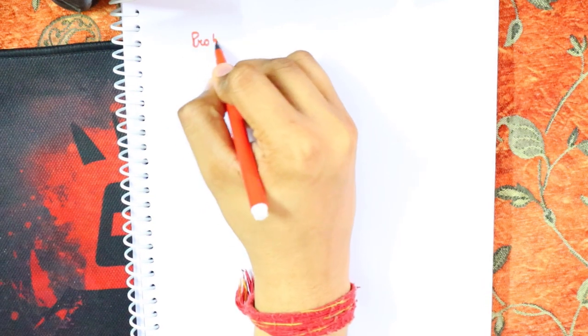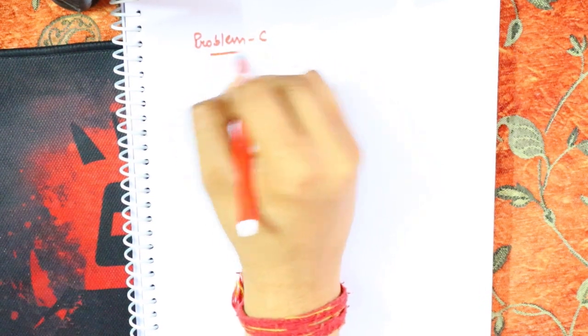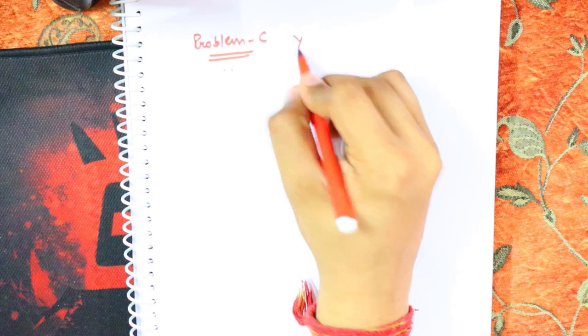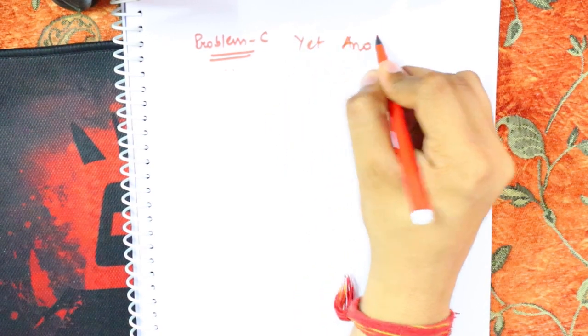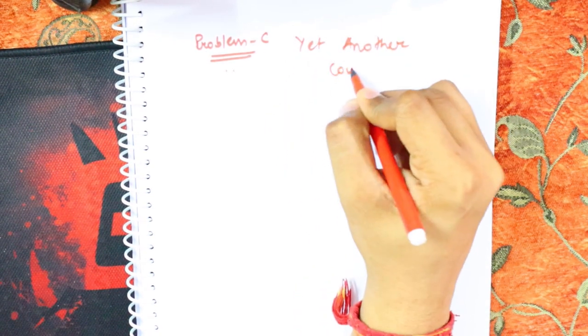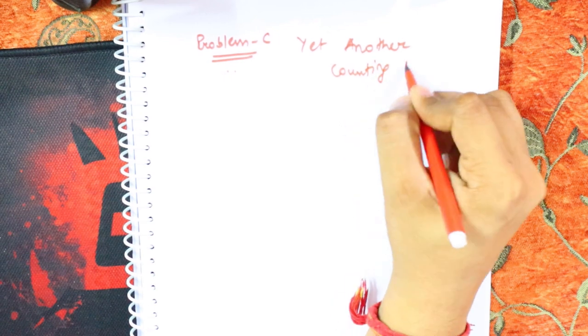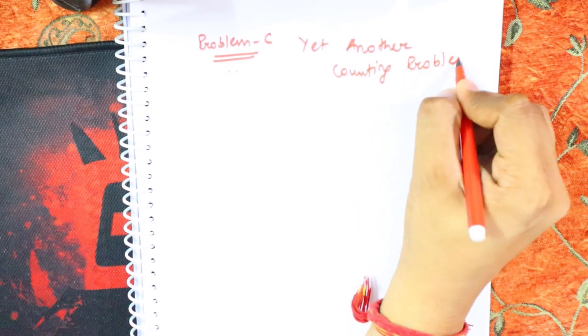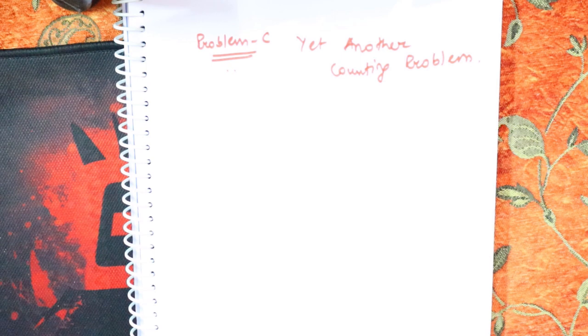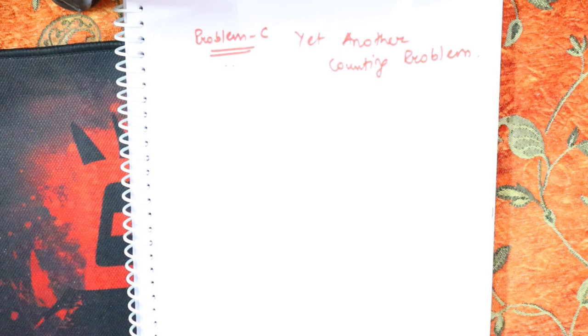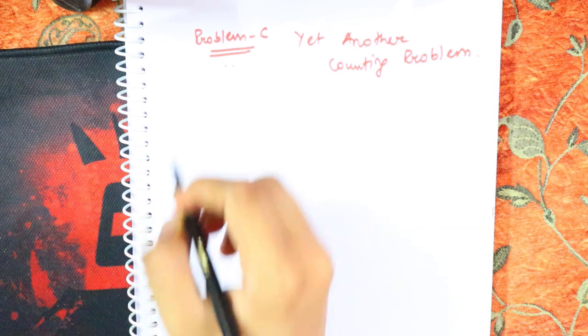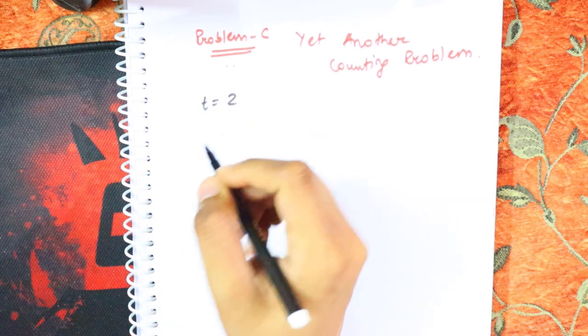We are going to see problem C - yet another counting problem. First I will explain the problem statement, what the problem says, and after that we will move on to the approach and then the solution. We will be having T, and after that we will be having A, B, and Q.